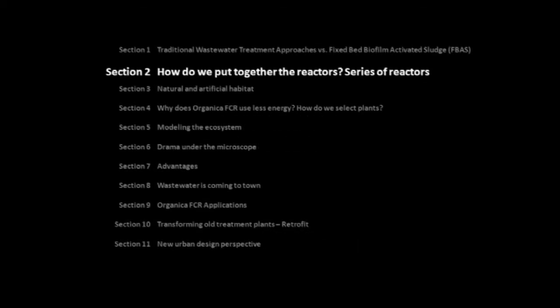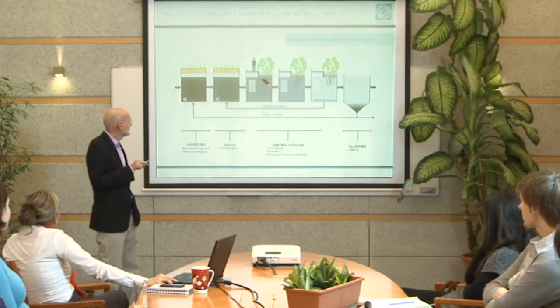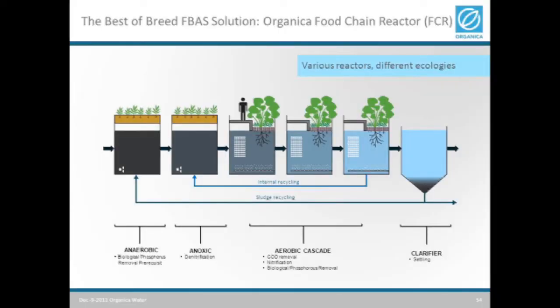We arranged the reactors — previously we talked about one typical reactor — we arranged the reactors in a series, and typically we would have six to eight cells or reactors. As the water flows from one tank to the other, different ecologies will develop in each tank.